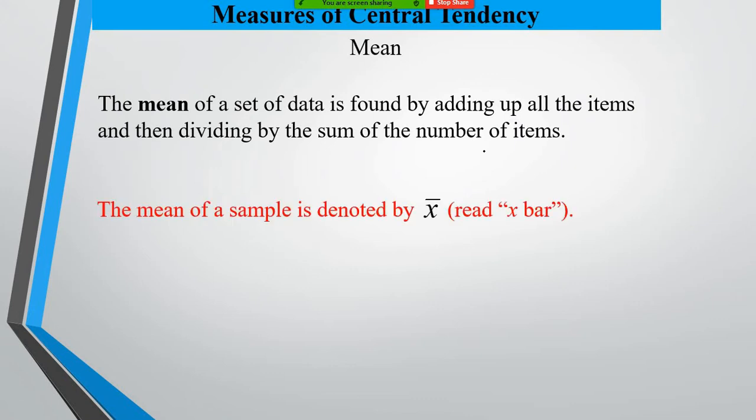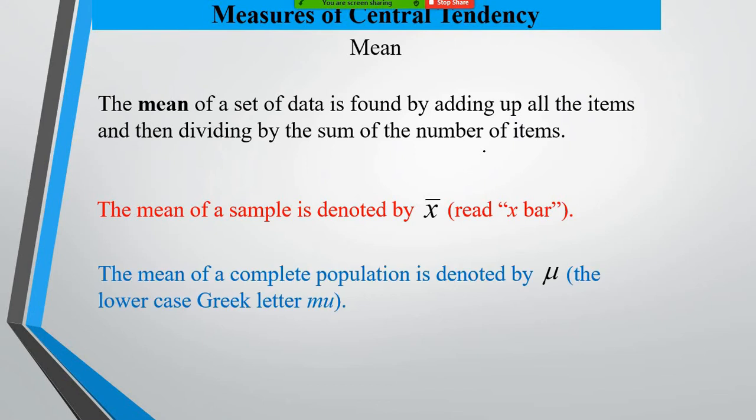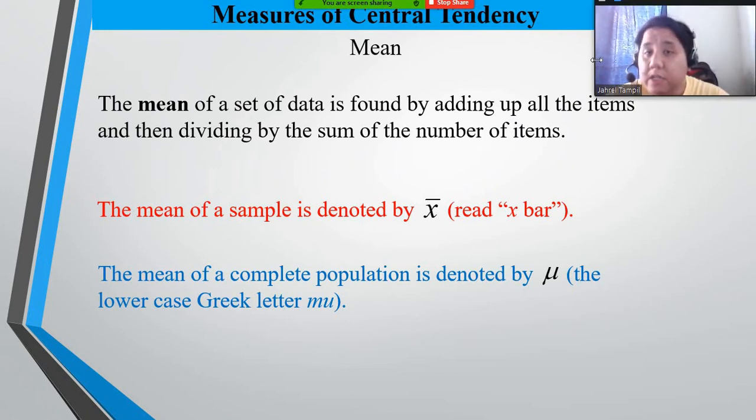The mean of a sample is denoted by the symbol x bar, while the mean of a complete population is denoted by mu. The definition that was given tells us also the formula for finding the mean.